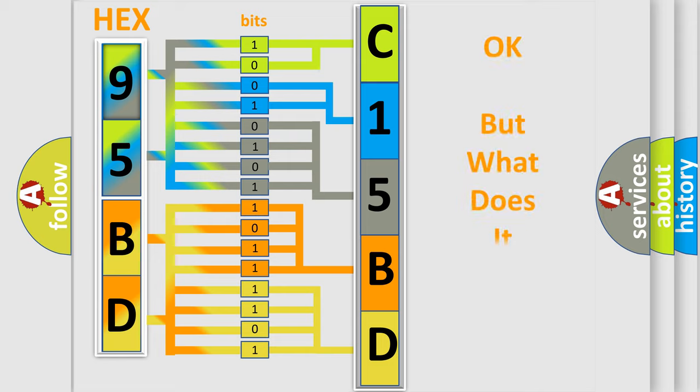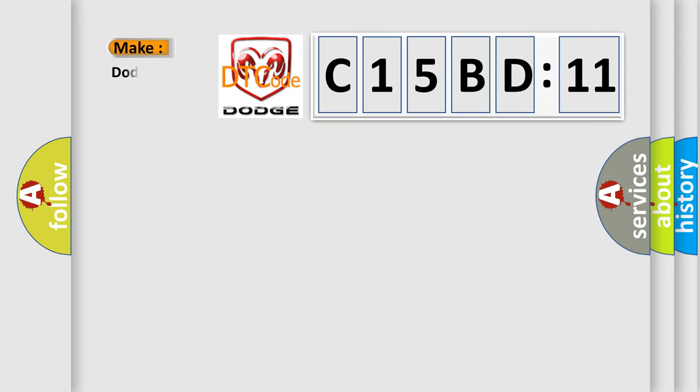We now know in what way the diagnostic tool translates the received information into a more comprehensible format. The number itself does not make sense to us if we cannot assign information about what it actually expresses. So, what does the diagnostic trouble code C15BD11 interpret specifically for Dodge car manufacturers?